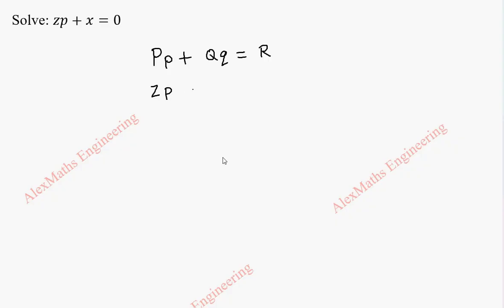become 0, actually 0 into q. Capital Q is 0 and this x we can take to the other side which is minus x. Now by comparison, capital P is z, capital Q is 0, capital R is minus x. Let's take it separately: capital P is z, capital Q is 0, capital R is minus x.